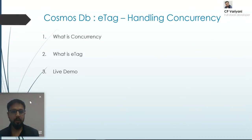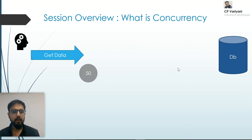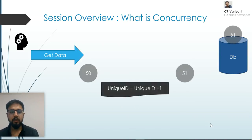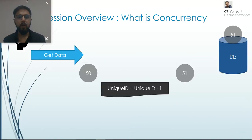We'll cover two things: what is concurrency and what is ETag. Let's understand what is concurrency in a real scenario. Let's say in your application there is one user who requests the server to get some data — a unique number — and your server returns 50, the current value of that data. You have logic that says the unique ID should be plus one, so you fetch 50, add one, and save 51 in the database. This is the simple scenario with one user.